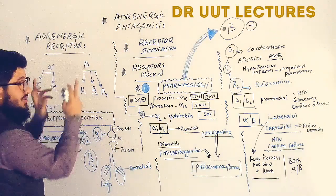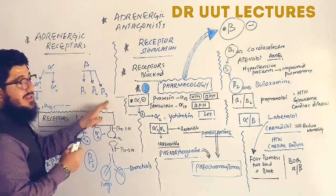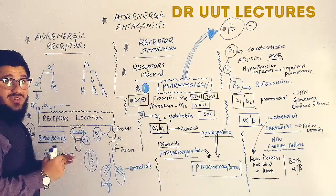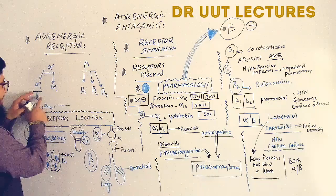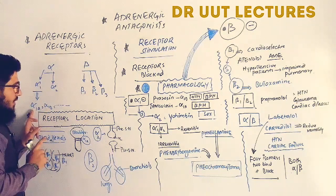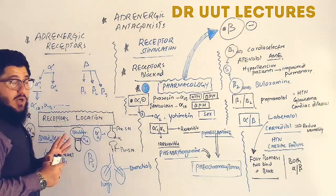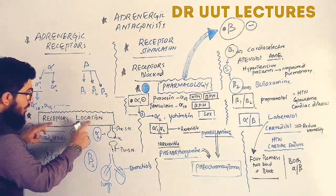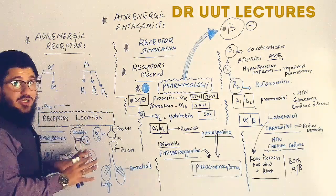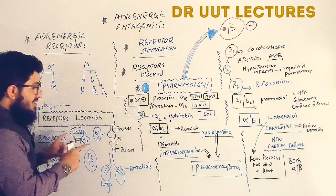The adrenergic receptors present in our body are alpha and beta, which are further divided into alpha-1, alpha-2, beta-1, beta-2, and beta-3. In this lecture we will extend our discussion to the subtypes of alpha — that is, alpha-1a and alpha-1b. Before we move to the complex pharmacology, we must know the receptor locations.